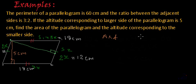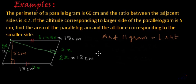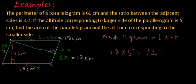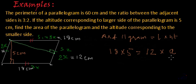Let's recall the formula for the area of a parallelogram: area equals the length of the base multiplied by the height or altitude. If I take the longer side, 18, the height is given as 5. Since we are talking about the same parallelogram, if we take the smaller side as 12 and assume the altitude corresponding to it as A, both areas will be equal — because it is the same parallelogram.